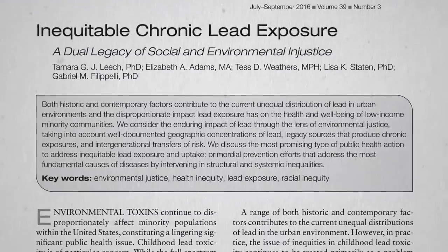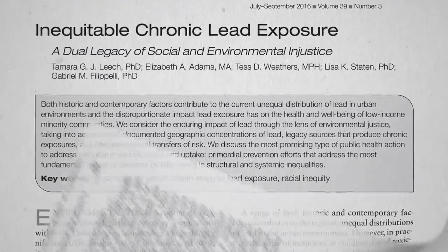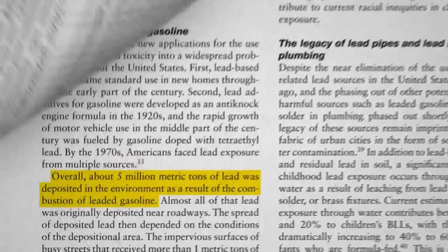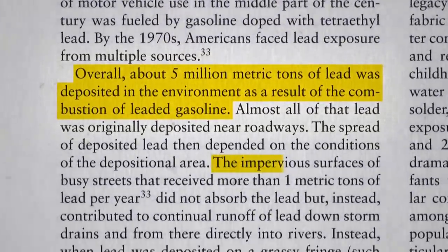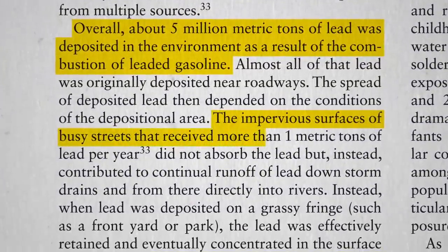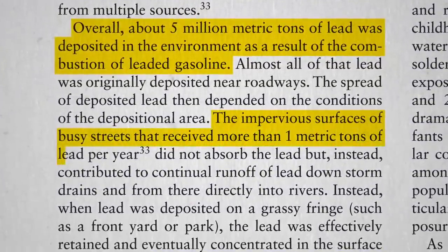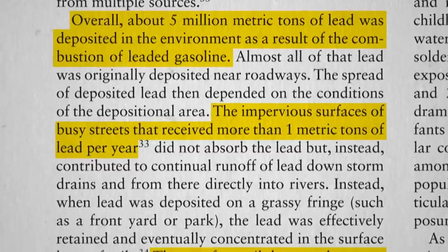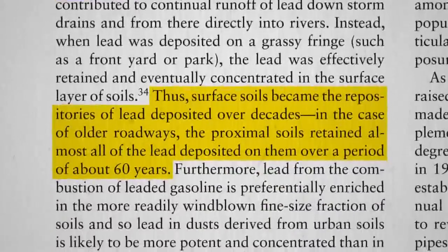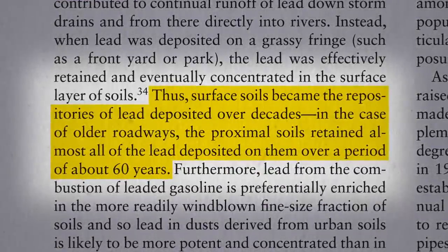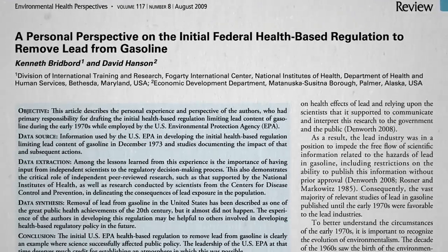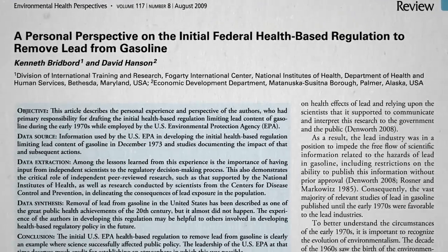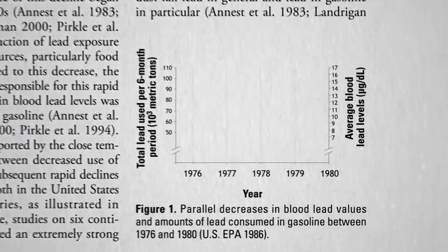Overall, about 5 million metric tons of lead was deposited. A single busy street could receive more than a ton a year, and the lead just built up decade after decade — but at least thanks to regulations starting in the 70s, we stopped spewing so much into the air.